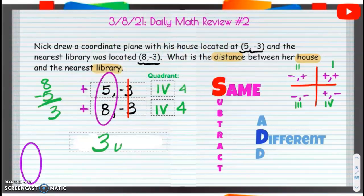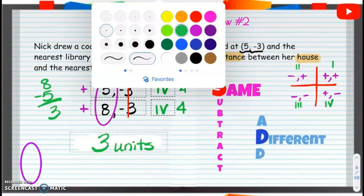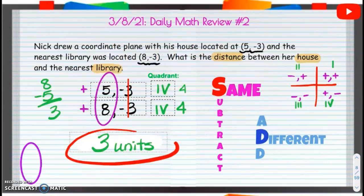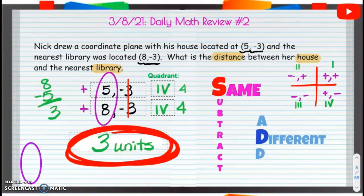3 units. So, the distance is going to be 3 units. And that's it for our DMR number 2. Great job.